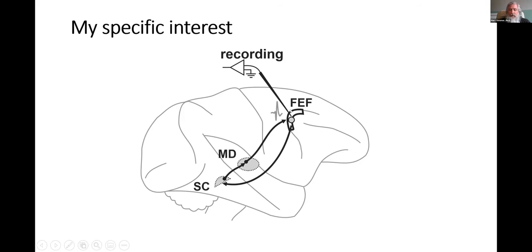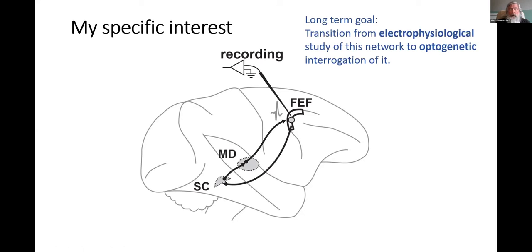One circuit that I've spent a lot of time figuring out is the connections between frontal eye field and superior colliculus. The frontal eye field sends projections directly to the superior colliculus in the brainstem and the colliculus reciprocates through a disynaptic pathway that goes through the thalamus, particularly the mediodorsal nucleus of the thalamus. In the long term, we want to transition from electrophysiological study of this network to an optogenetic study design.